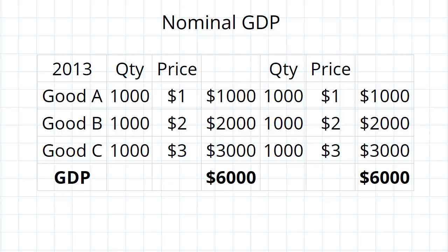Imagine that we've got two different economies. We're looking at the year 2013 — each economy makes 1,000 of good A, good B, and good C, which are priced at $1, $2, and $3 respectively. The GDP of each comes out to be $6,000.